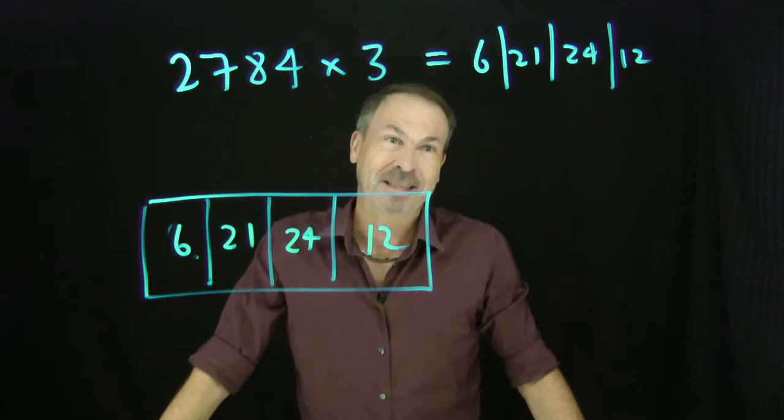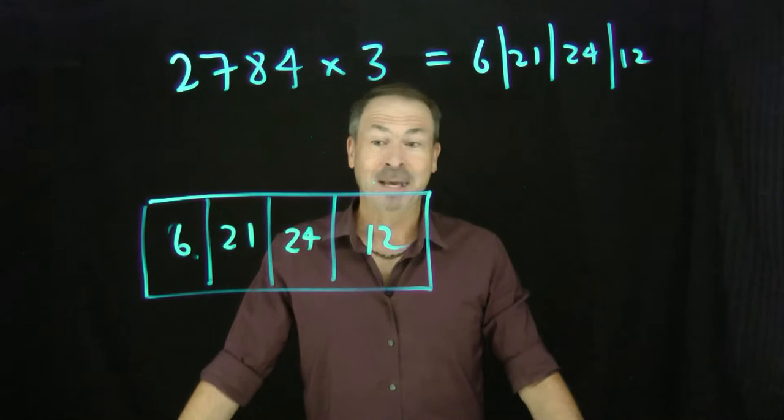Now, of course, society won't like that answer. That's too weird. 6,2100, 24, 12. So how can we fix that up for society?